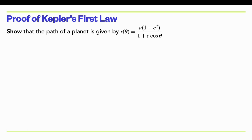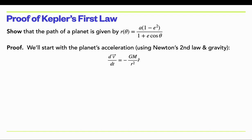Now let's move on to Kepler's first law. We want to show that Newtonian physics predicts that the path of a planet under gravitational force follows the equation of an ellipse. We'll start with the planet's acceleration: take Newton's law of universal gravity and plug it into F = ma. We cancel the masses of the planet because mass times acceleration equals that force, so the acceleration is just given by GM/r².